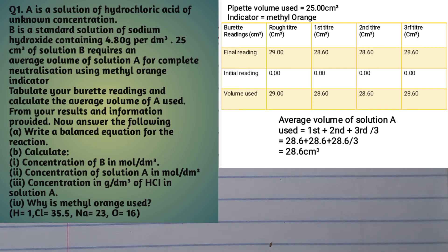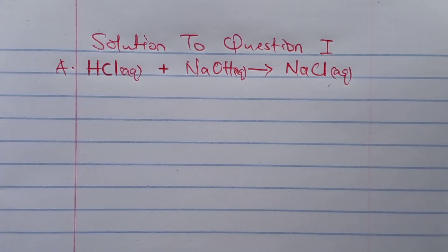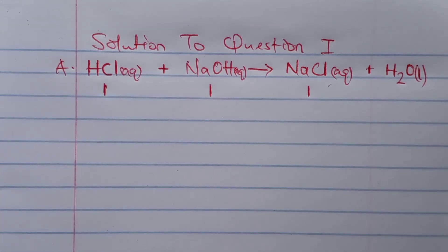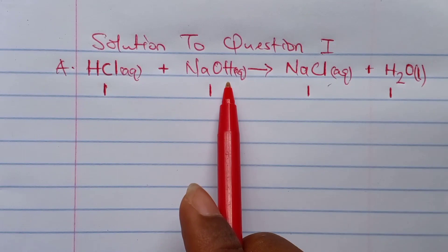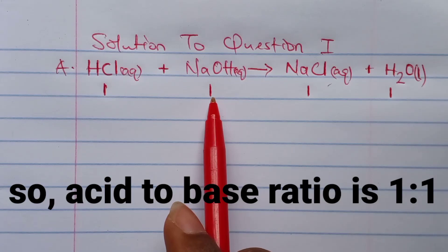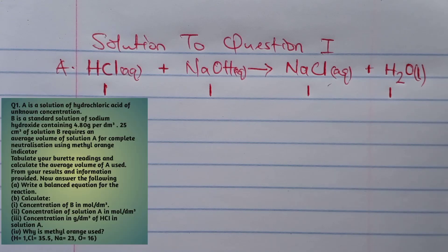We are asked to write the balanced equation of the reaction between hydrochloric acid and sodium hydroxide. This reaction gives us sodium chloride, still in water, because sodium chloride is soluble in water — that is why the (aq) symbol is there. Water is denoted by the letter L as liquid. The coefficients of all species are just 1. This is the acid and this is the base, so Na from this equals 1 and NB equals 1. That is question 1A treated.